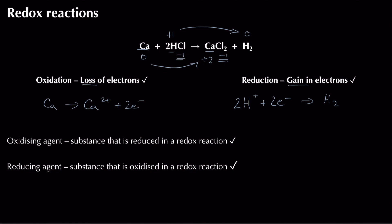You might also come across the terms oxidising agent and reducing agent. An oxidising agent is a substance that is reduced in a redox reaction — by being reduced, it oxidises something else. A reducing agent is a substance that is oxidised in a redox reaction — by being oxidised, it reduces something else.